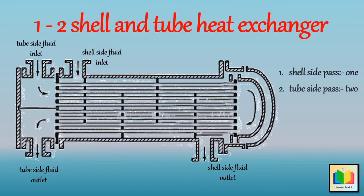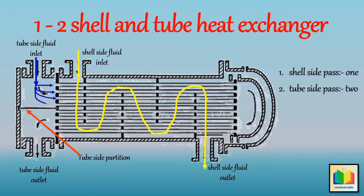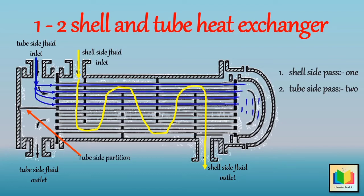In a 1-2 shell and tube heat exchanger, the shell side fluid flows once through the exchanger as there is no partition. And the tube side fluid flows twice through the exchanger due to one tube side partition.